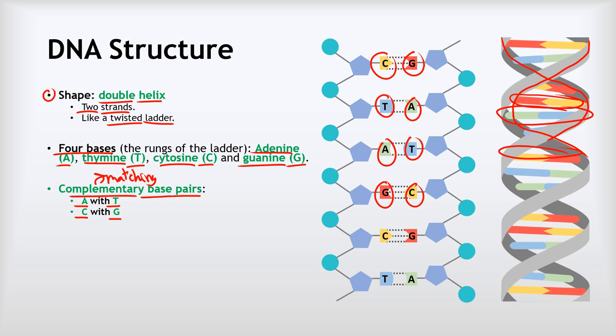Those are the only way around the pairings can work. For example, C cannot pair with thymine, it can't pair with adenine, and it can't even pair with another cytosine. Thymine here, it can't pair with cytosine, it can't pair with guanine, and it can't even pair with another thymine—it can only pair with an A. That's our complementary base pairing.